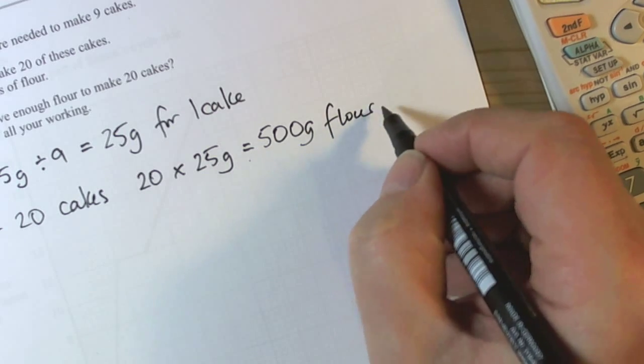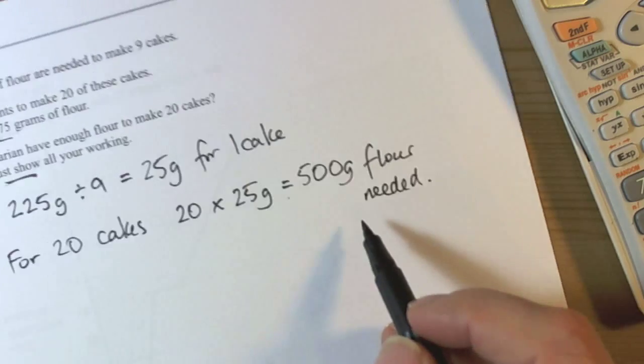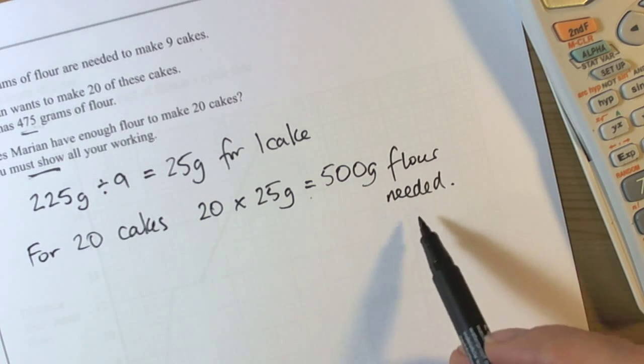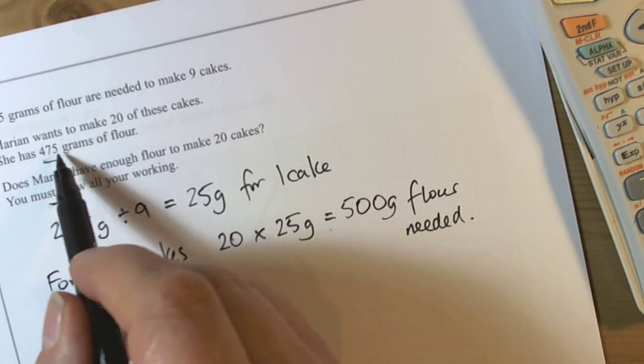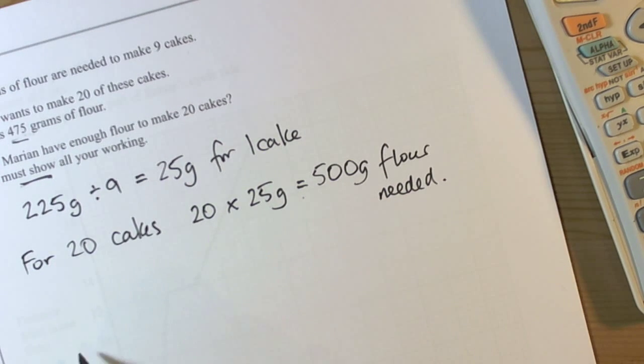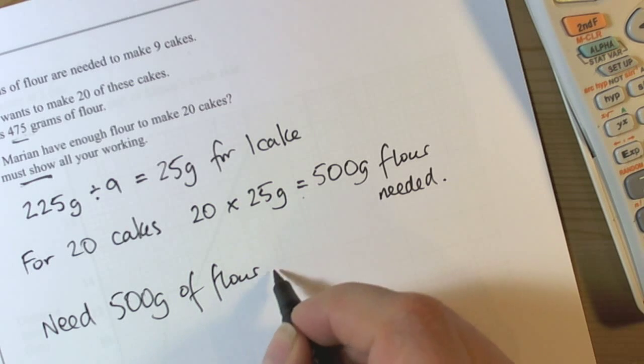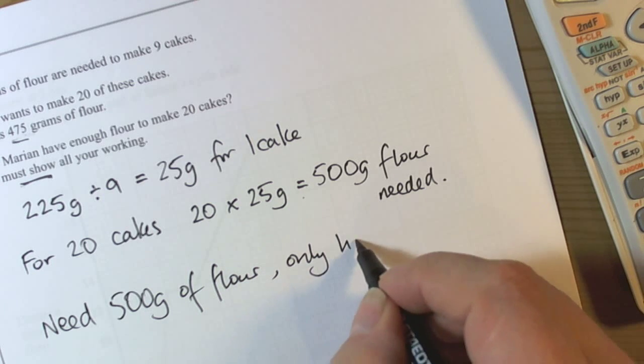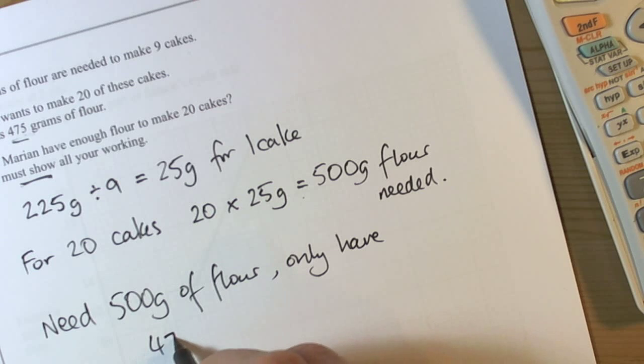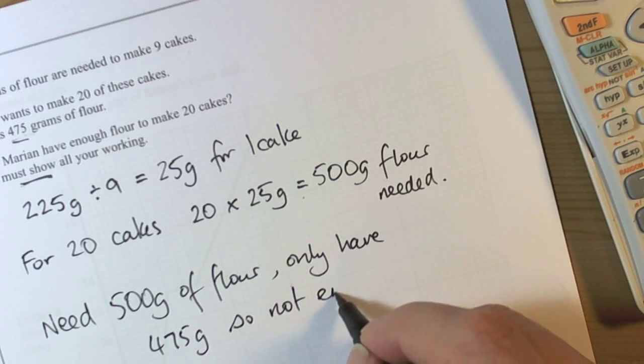We can see then, because there's 500 grams of flour needed, the question said that there was only 475 grams of flour actually available. So our conclusion is going to have to be there's not enough flour. Need 500 grams of flour, only have 475 grams, so the conclusion is not enough flour.